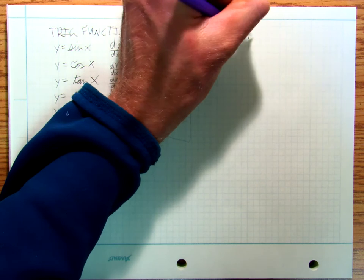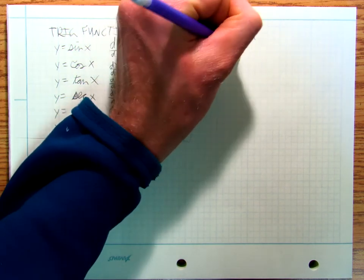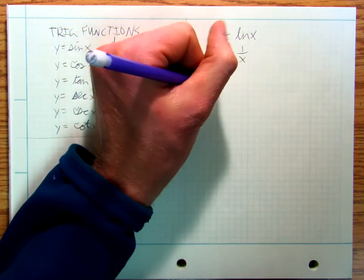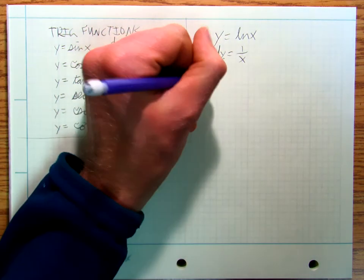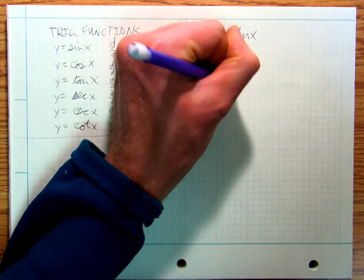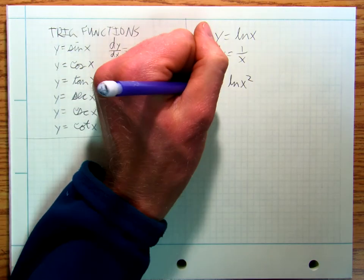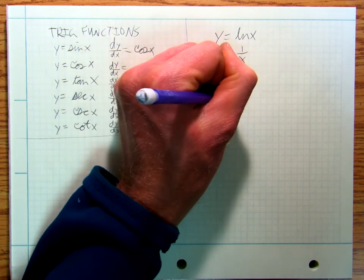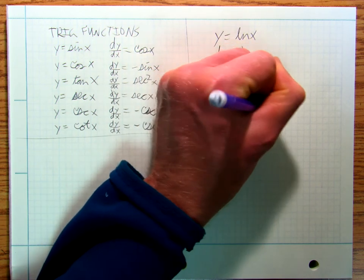y equals ln x, dy/dx is equal to one over x — very important. And then y equals ln of x squared — that's a chain rule — so y prime is equal to two x over x squared, which equals two over x.